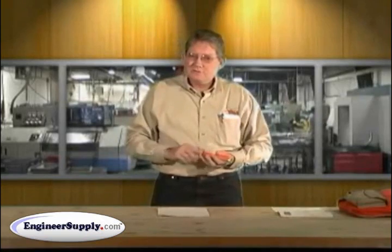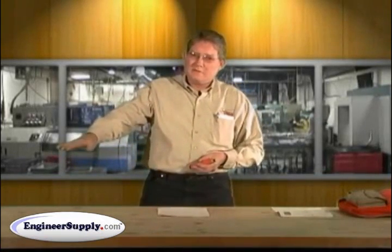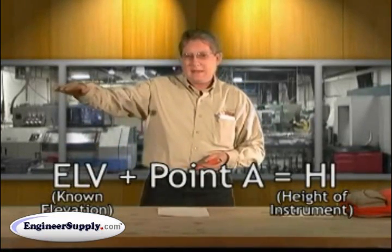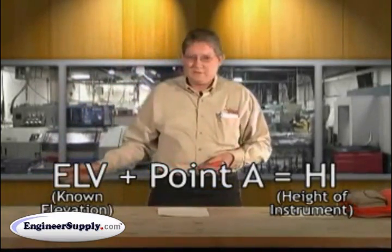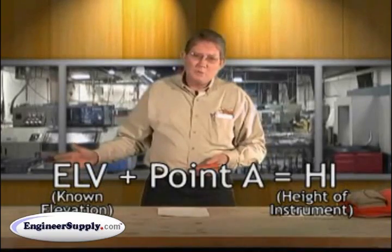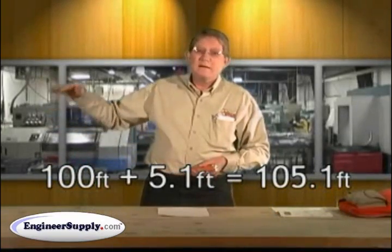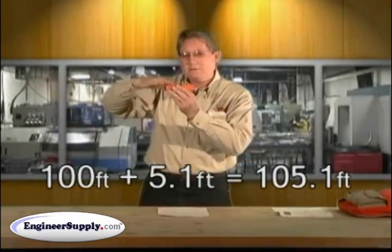If you're calculating elevations, you simply add your known elevation to rod reading A. Let's assume we started off on the corner and it was 100 foot elevation. 5.1 to 100 is 105.1, so that's the actual height of your instrument.